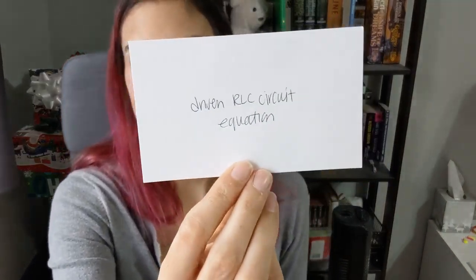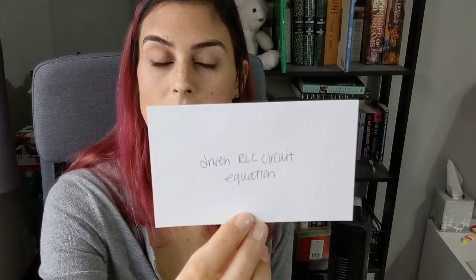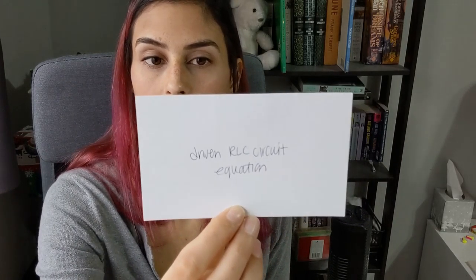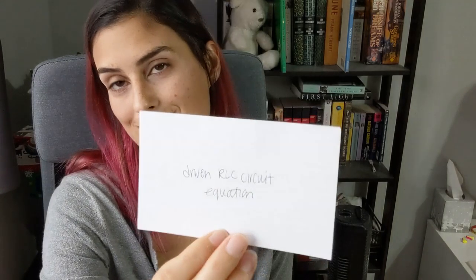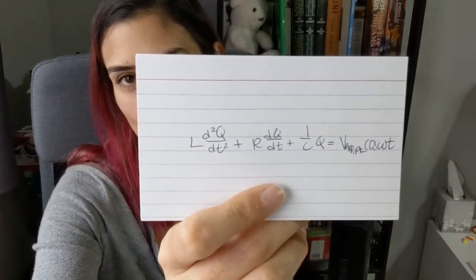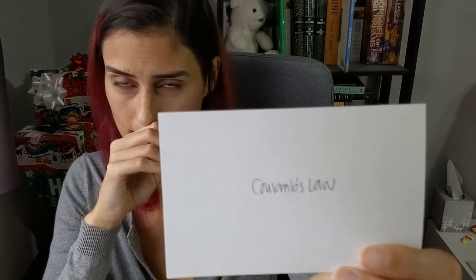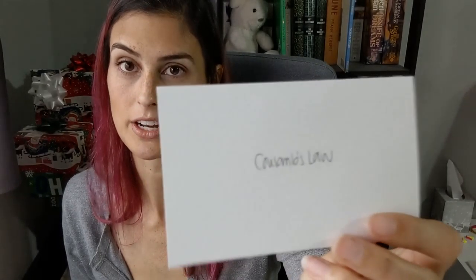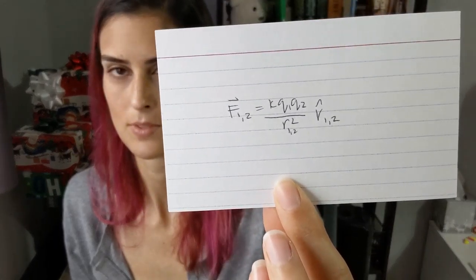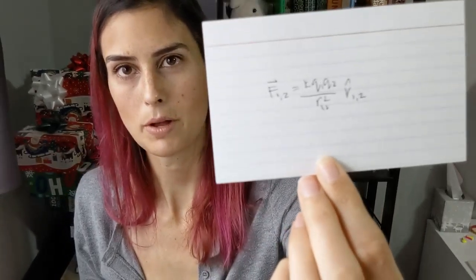A driven RLC circuit equation: L times the second derivative of Q with respect to time, plus R times the first derivative of Q with respect to time, plus 1 over C times Q equals V applied peak times cosine of omega t. Coulomb's law: the force between objects 1 and 2 equals k times Q1 times Q2 over r12 squared in the r12-hat direction — repulsive for same charges.